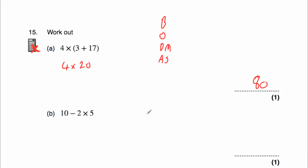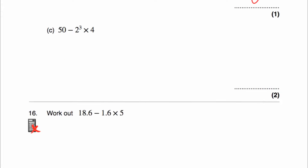Question 15b: 10 take away 2 multiplied by 5. We do the multiplication before subtraction: 2 times 5 is 10. Then 10 take away 10 is 0. Our answer is 0.